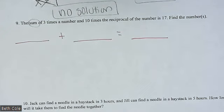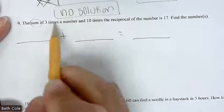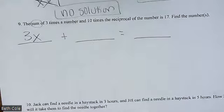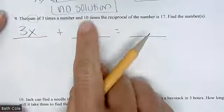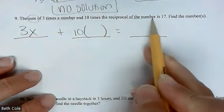As an extension — which word means subtraction? Difference. What means multiply? Product. And divide? Quotient. Sum of three times the number — how would you write three times the number? Three X. Now the second part's a little tricky: ten times the reciprocal of the number. What's the reciprocal of four? One fourth. The reciprocal of X is one over X.